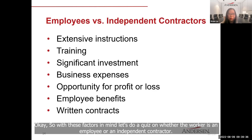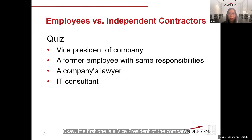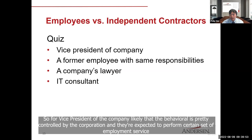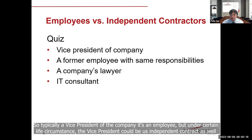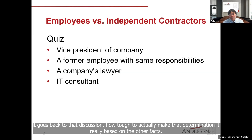Let's do a quiz. First: a vice president of a company. A VP's behavior is typically controlled by the corporation, they perform a defined set of services, and their financial control is relatively low — paid a fixed salary with no financial risk of loss. So typically a VP is an employee. However, under certain circumstances — for example if an officer performs only minimal services — they might lean toward independent contractor status.